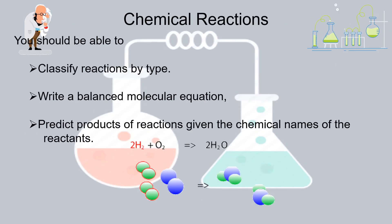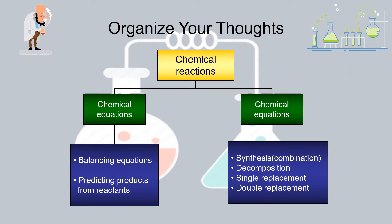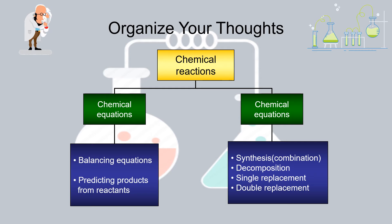In today's class we should be able to classify reactions by type, write a balanced molecular equation, and predict products of reactions given the chemical names of the reactants. In this chapter we will be learning about chemical equations, balancing chemical equations, predicting products from reactants, and types of reactions: decomposition, single replacement, double replacement, combustion, and synthesis.